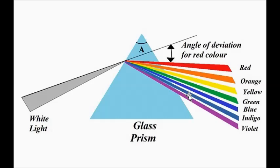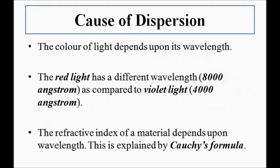This is what happens, but why does dispersion occur? The color of light depends upon its wavelength. Red light has a wavelength of around 8000 angstrom, and violet light has a wavelength of about 4000 angstrom.